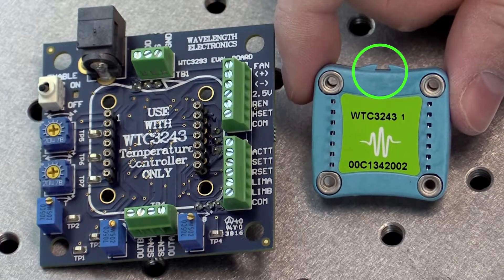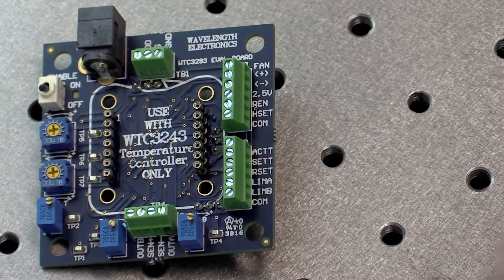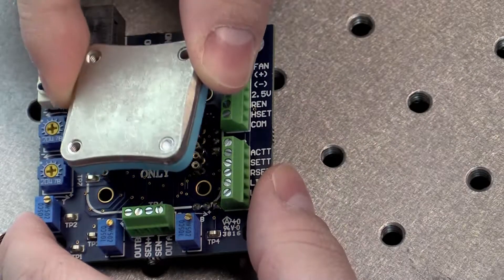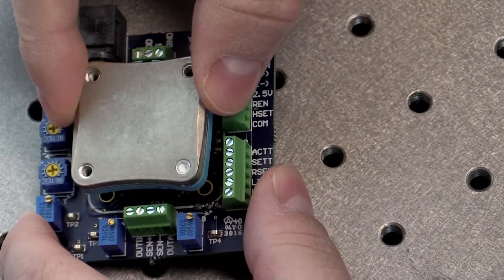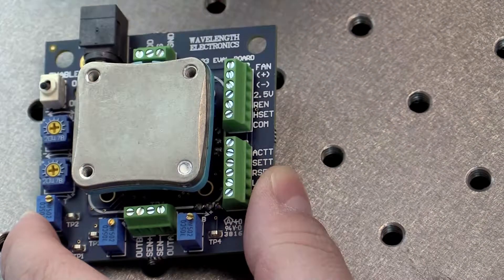Next, install the WTC on the board. Match up the notch on the WTC with the silkscreen on the PCB. Align the pins with the sockets and press firmly to seat the WTC. Make sure that none of the pins were bent during insertion before continuing.